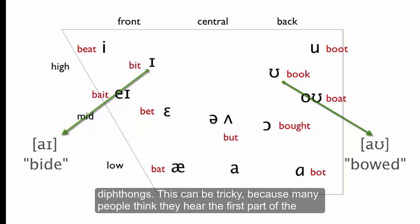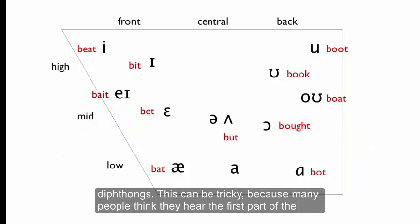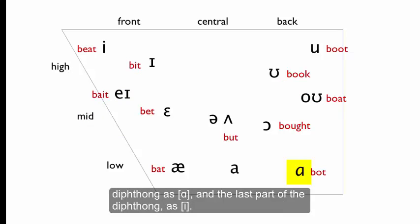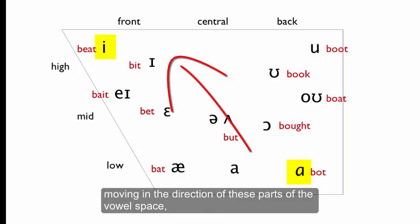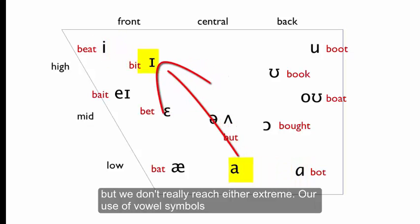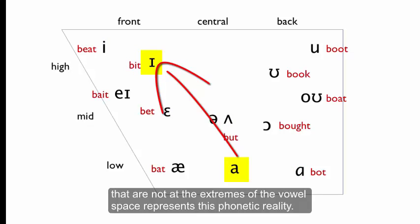This can be tricky because many people think that they hear the first part of the diphthong as ah and the last part of the diphthong as E. The truth is that in most diphthongs, what we produce is something that's moving in the direction of these parts of the vowel space, but we don't really reach either extreme.